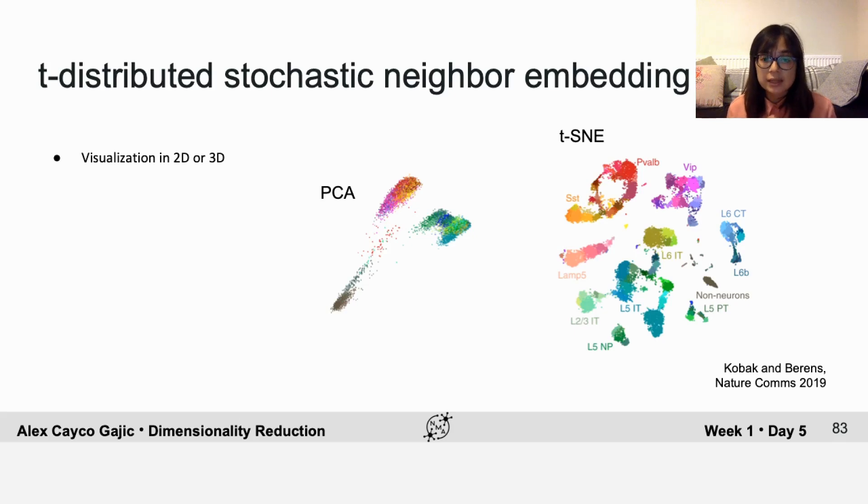On the left, you don't quite see that same type of clustering of different data types if you just look at the first two principal components.